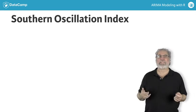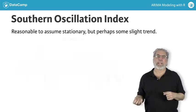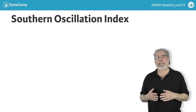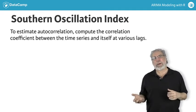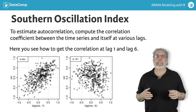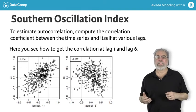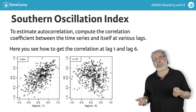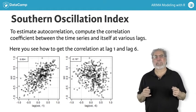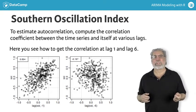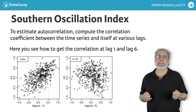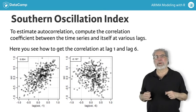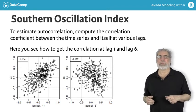The Southern Oscillation Index is reasonably stable — it looks the same in any segment of time, although there might be some slight trend. The scatter plots show correlation in terms of lag; this is called autocorrelation and is the same as the correlation you learned about in regression. The graph shows that the Southern Oscillation Index, which is a surrogate for sea surface temperature, is positively correlated with itself one month apart, but negatively correlated with itself six months apart, as it is hot in the summer and cold in the winter.